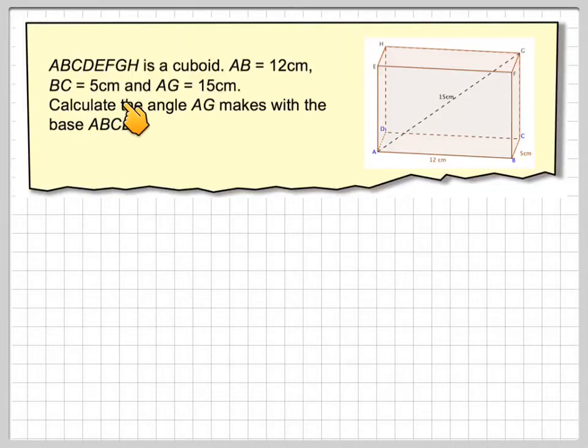ABCDEFGH is a cuboid. AB is 12 cm, BC is 5 cm, and AG is 15 cm. Calculate the angle AG makes with the base ABCD.